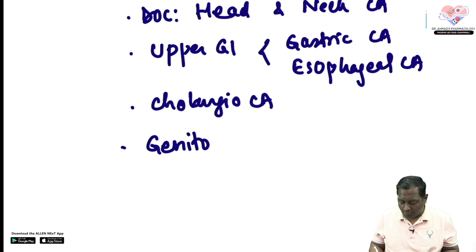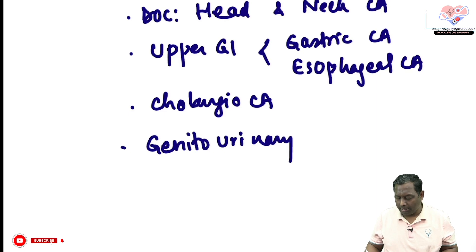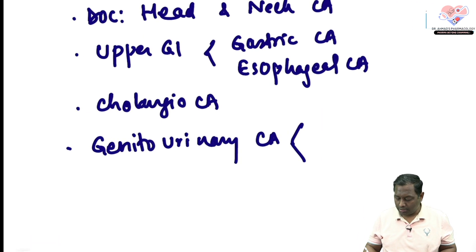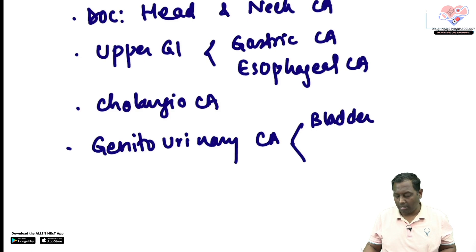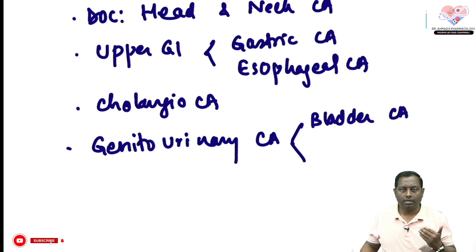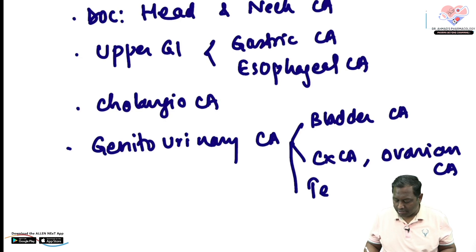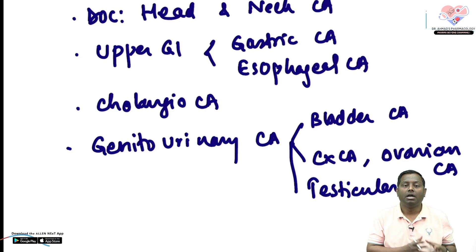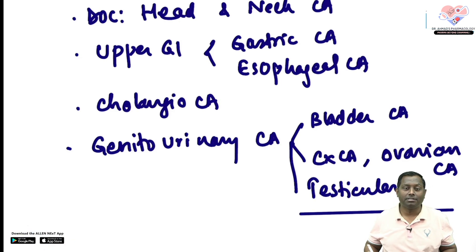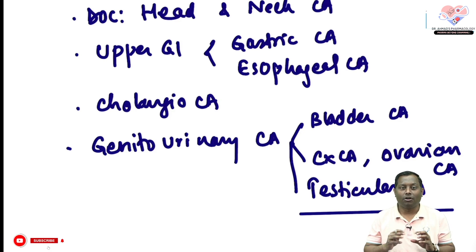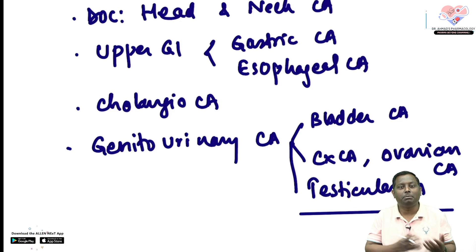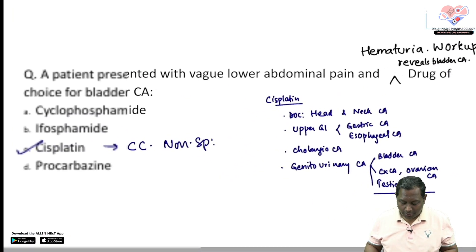For genitourinary carcinoma — bladder carcinoma in both male and female — cisplatin is the drug of choice. It is also the drug of choice for cervical cancer, ovarian cancer, and testicular cancer. For testicular carcinoma, the BEP regimen is used: Bleomycin, Etoposide, and a Platinum compound — so cisplatin is still the drug of choice here.